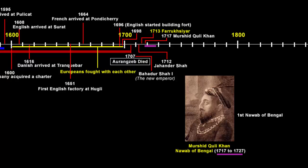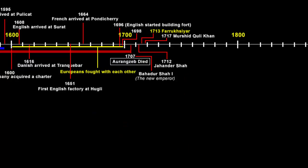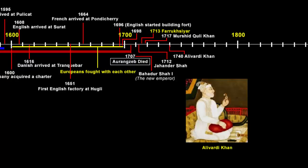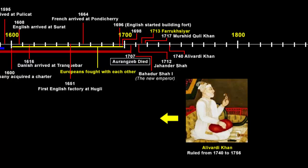Murshid Quli Khan eventually died in 1727. There were only three Nawabs including him who were strong rulers of Bengal. Fast forward to the next strong ruler, Alivardi Khan, who became the Nawab in 1740. He ruled for almost 16 years, and during this time he was mostly engaged in various wars against the Marathas — another empire in India who wanted to establish their rule, and who are also credited to a large extent for ending the Mughal rule. Towards the end of his 16 years of power, Alivardi Khan turned his attention to rebuilding Bengal, and that's when his focus shifted to the English company. He too died in 1756.